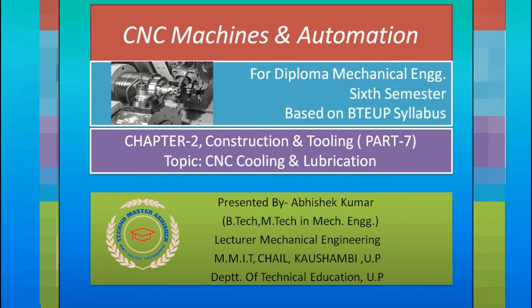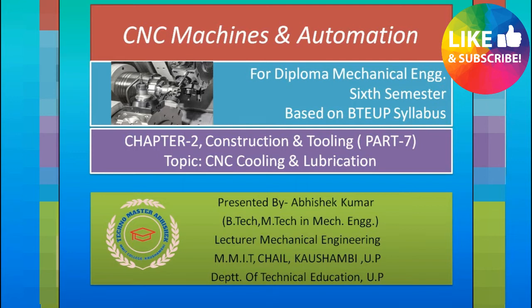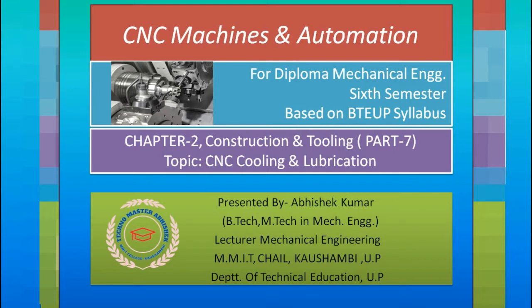Previously humne axis drives koon koon se hoote hain wo discuss kiya tha. Usse pehle humne CNC machine ka tooling ya construction kaise hoota hai, machine tools koon koon se use hoote hain, wo sari chizen humne discuss kar li. So basically this chapter is dedicated to construction and tooling - that means machine jo hain use kar rahe hain wo kaise bani hai, uske construction kaise hai, usme koon koon se tools use kar rahe hain.